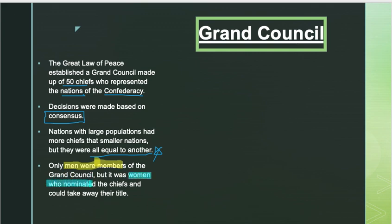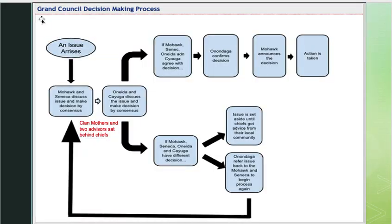Only men were members of the Grand Council, but it was women who nominated which men would attend. This really equalizes and balances the role of men and women. Women could also take away a chief's title if he wasn't acting in the interest of the people, so women actually had a ton of power in Iroquois society — specifically with the Grand Council. This is the Grand Council decision-making process — put a star next to this in your notes.